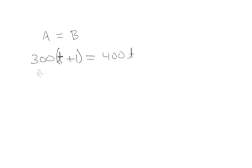So now that's going to equal 300T plus 300 times 1, 300, is equal to 400T. Okay, and then we use simple math again. And now, so that's going to be 400T minus 300T, so that's going to be 100T.